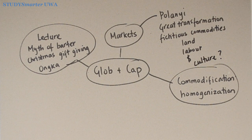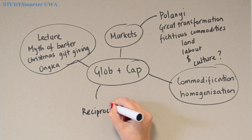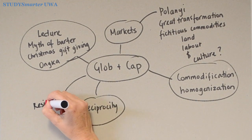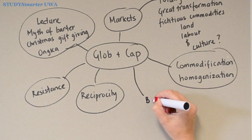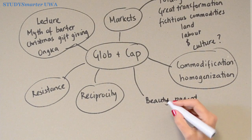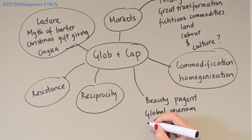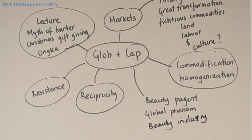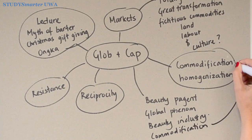I remember discussing reciprocity, and I think resistance to markets, commodification and cultural change is important to think about here — the ways in which that plays out. And then if I start to think about the beauty pageant, I wonder about it as a global phenomenon. I bet there's quite a bit written about the beauty industry and commodification — not just of beauty products and fashion, but of the women themselves: all that altering and reshaping that takes place. And this, of course, links back to homogenization.